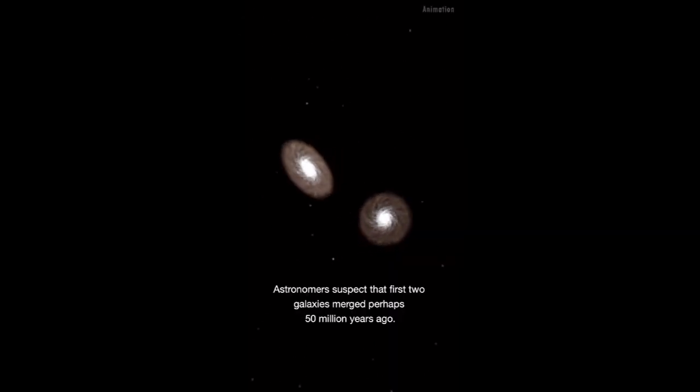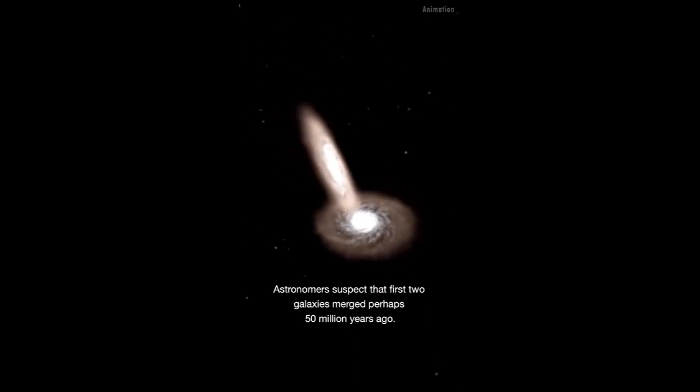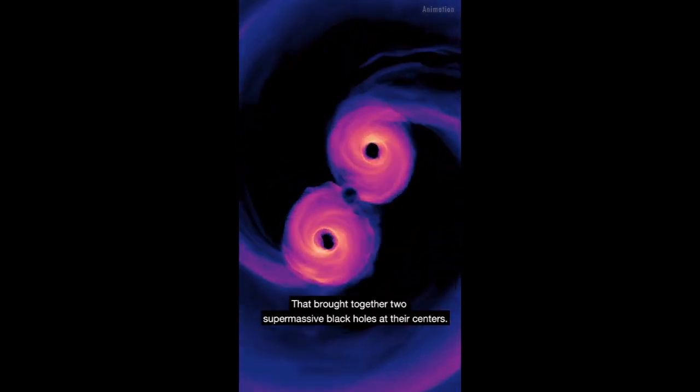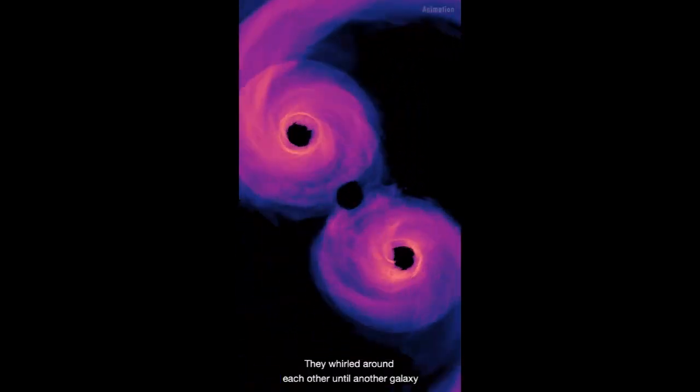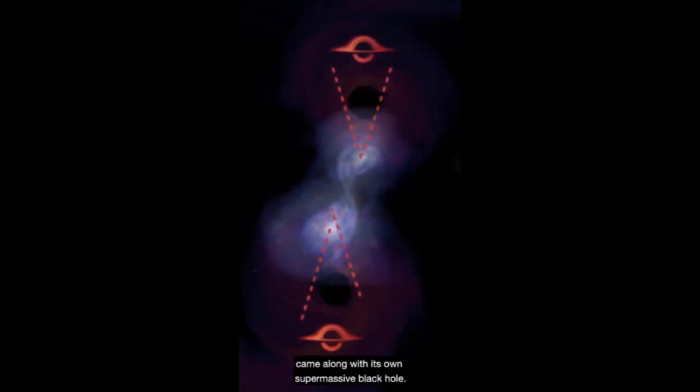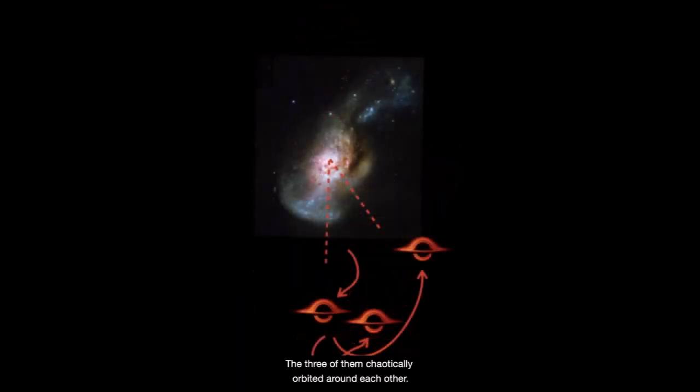Astronomers suspect that first two galaxies merged perhaps 50 million years ago. That brought together two supermassive black holes at their centers. They whirled around each other until another galaxy came along with its own supermassive black hole. The three of them chaotically orbited around each other.